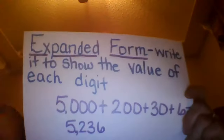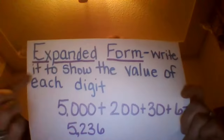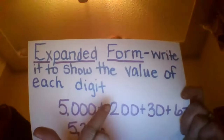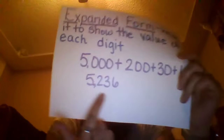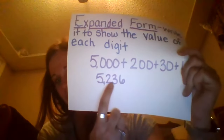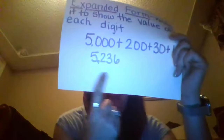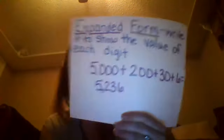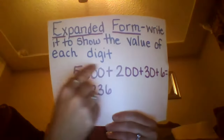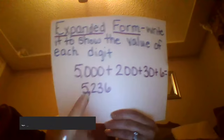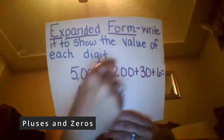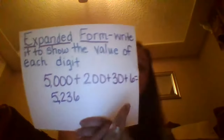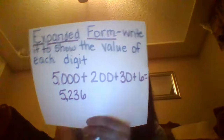The definition of expanded form is where you write a number to show the value of each digit. Down here this number — if you remember from a couple of videos, that is standard form, where the numbers are just hanging out by themselves. For expanded form, I put the value of this five, which was five thousand; this two, which was two hundred; the three, which was thirty; and the six, which was six.